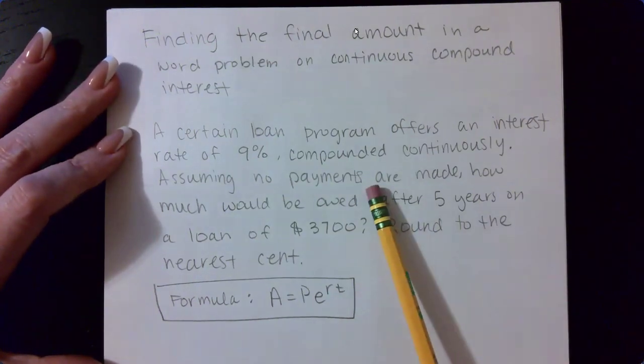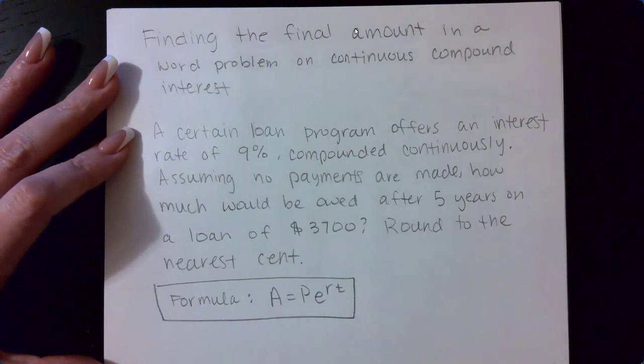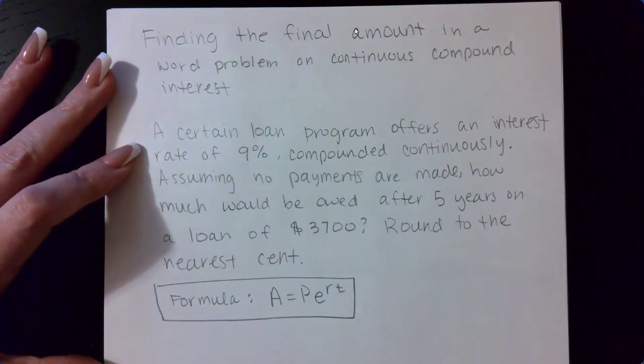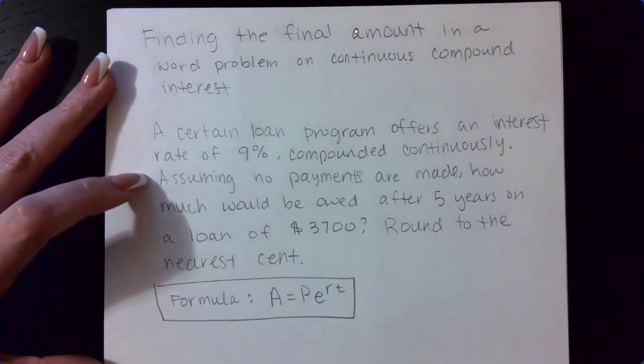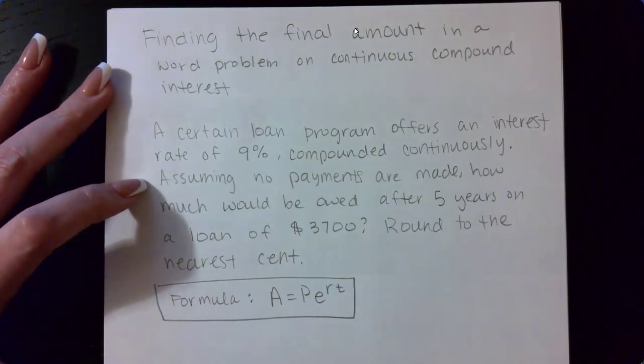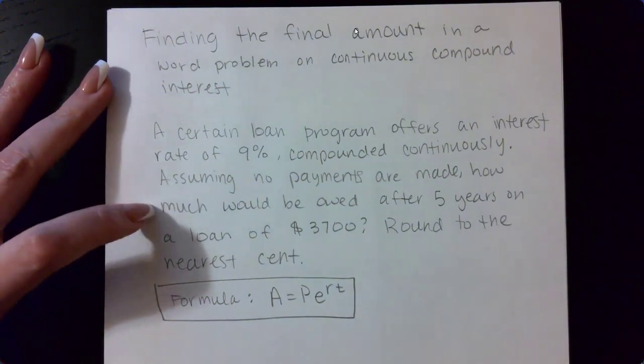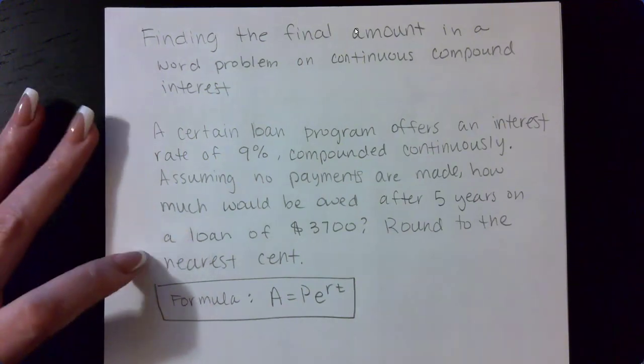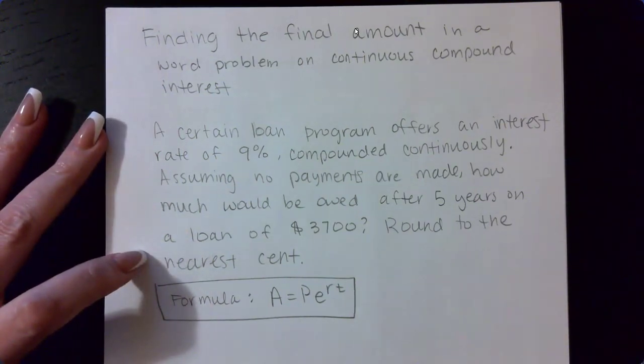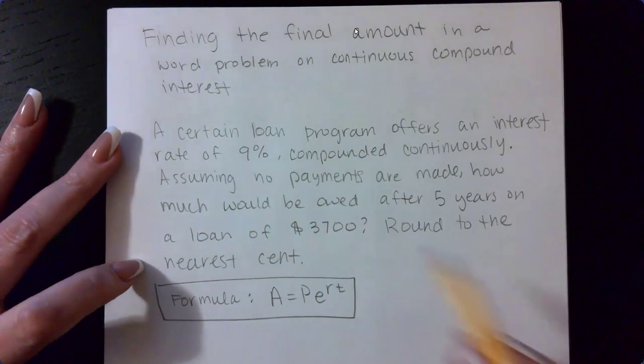So the question here is: a certain loan program offers an interest rate of 9% compounded continuously. Assuming no payments are made, how much would be owed after five years on a loan of $3,700? Round to the nearest cent.